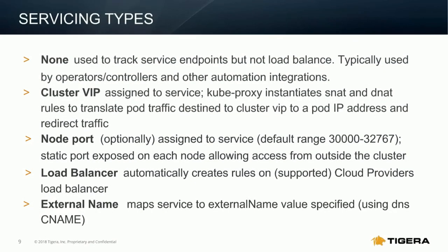Let's look at what the different service types are. The first is a null service type — none. If you've written your own Kubernetes controller, a piece of code that watches the Kubernetes API for specific objects and then acts on them, and you don't like any of the existing service types, you can write your own controller that does something when you define a service. None is basically a way for you to say this is a service, and your controller picks up on that and does something unique. ClusterVIP, which we just talked about, instantiates a kubeproxy instance and assigns a cluster VIP to one or more pod IP addresses.